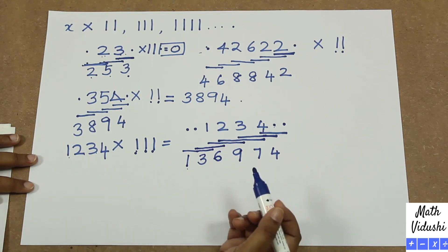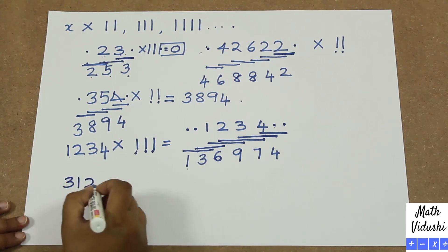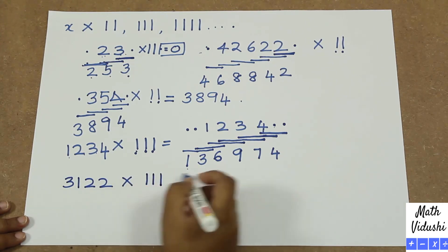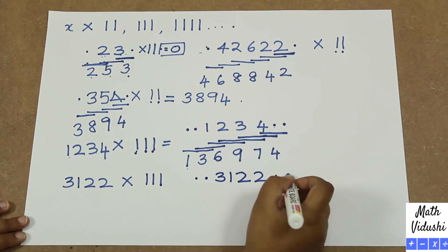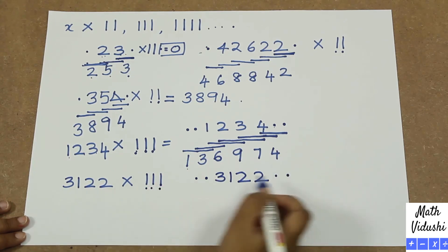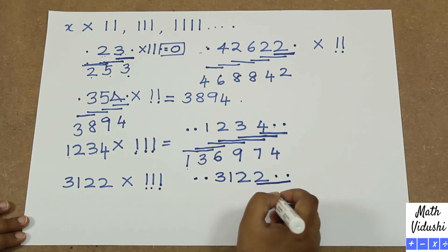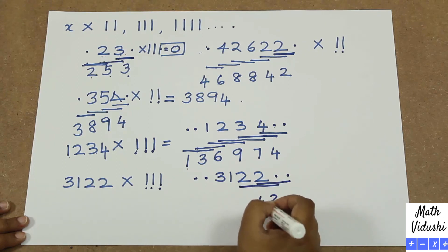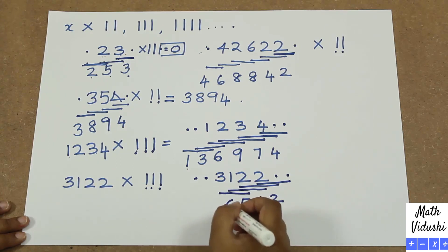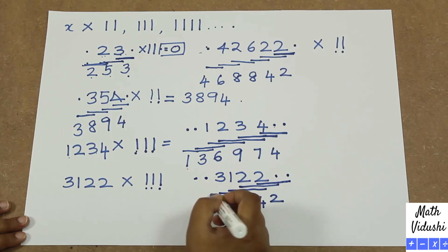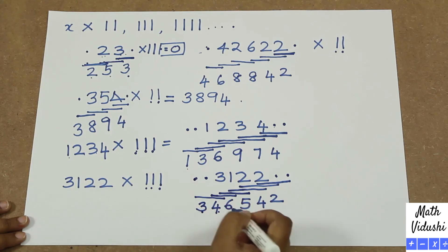Shall we do another one with three 1s? 31222 multiplied by 111. You put 2 dots in front of the number and 2 dots at the end — because there are three 1s, you put 2 dots on each side. Now take 3 numbers at a time: 2+0+0=2, 2+2+1=5 (wait: 2+2+0=4 actually), 2+2+1=5 (0+2+2=4), 2+1+3=6, 1+3+0=4, 3+0+0=3, reaching the last dot. So the answer is 3465422.